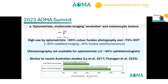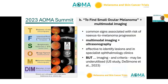Ultrasonography is not available to optometrists, compared with about 40% of ophthalmologists using it in the study. When it comes to stratifying risk factors or looking at common signs of risk from nevus to melanoma progression, one of the main systems used over many years is the TFSOM system with various modifications, covering thickness, subretinal fluid, orange pigment, and ultrasound — very useful in a specialist ophthalmology setting.